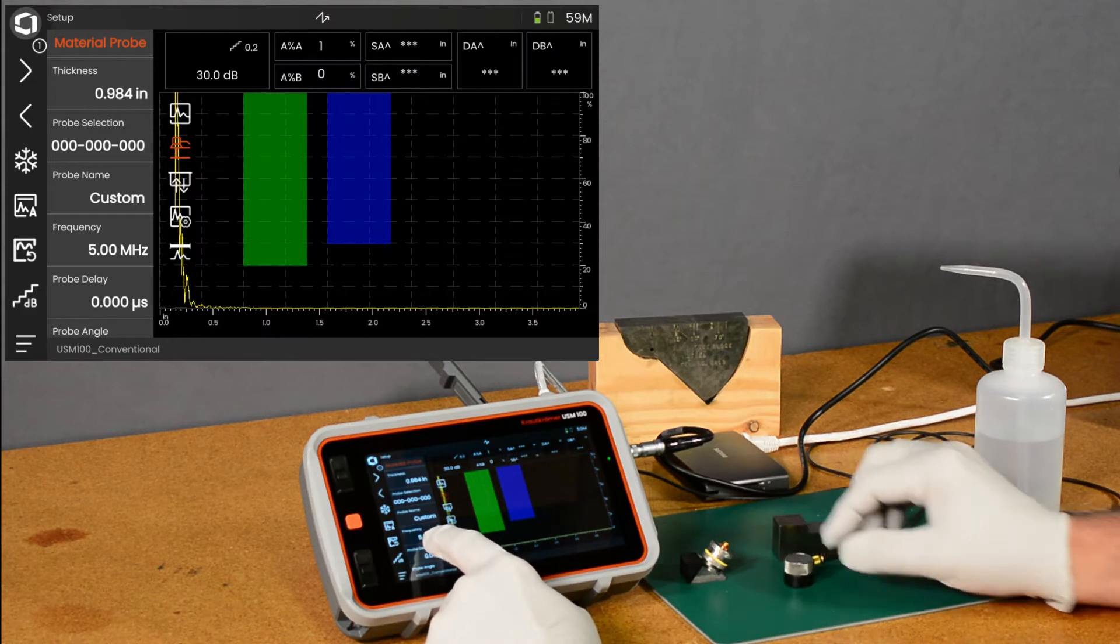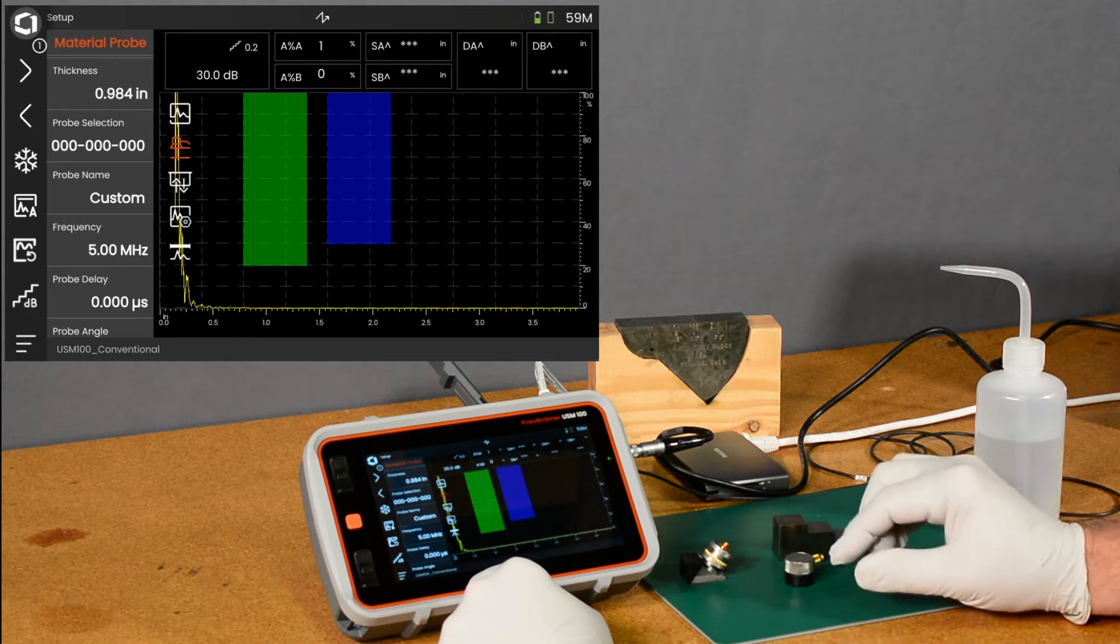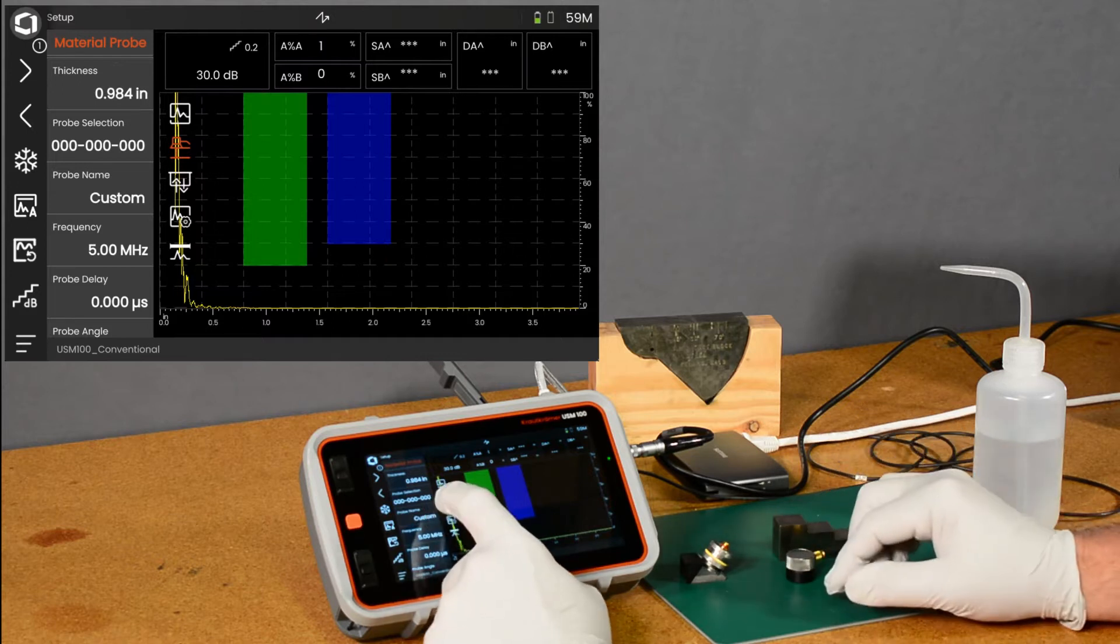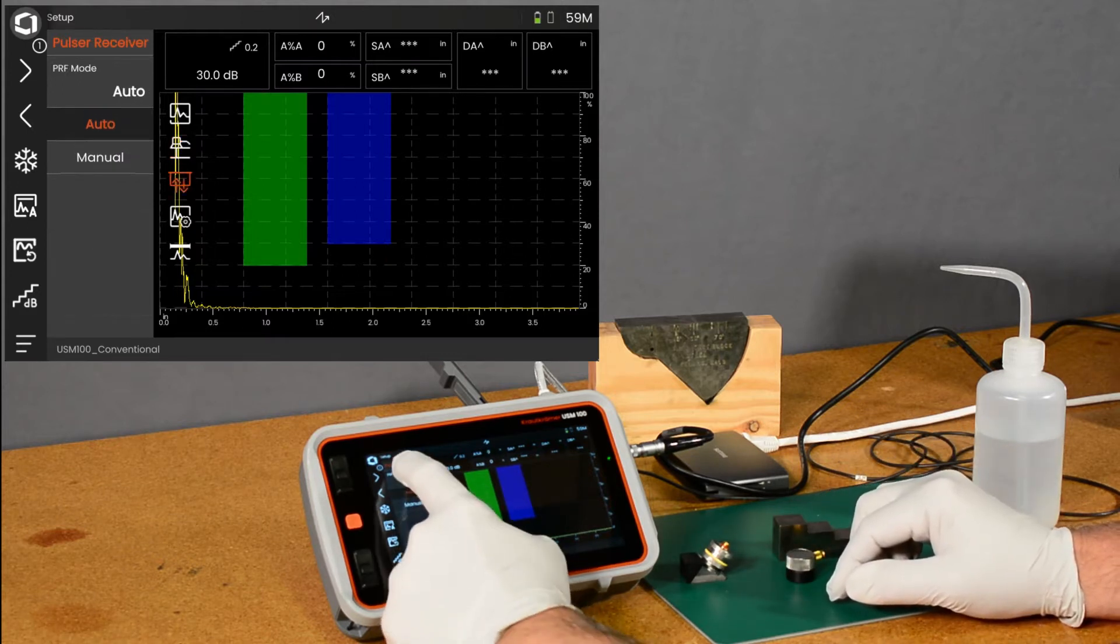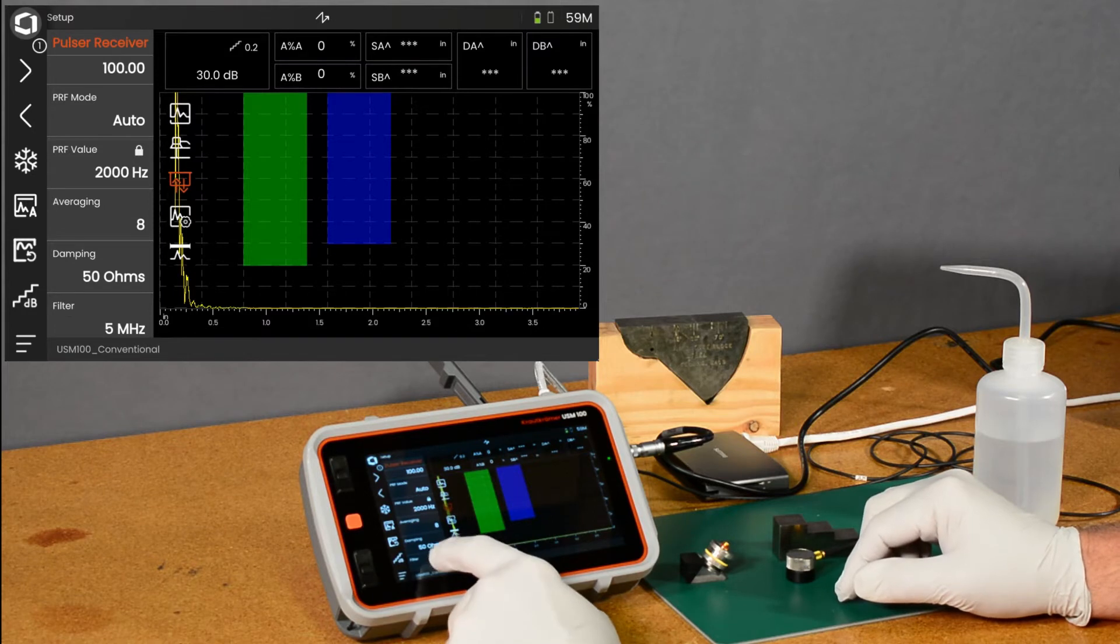This frequency control in the probe menu deals mainly with the calculation of pulse width for our square wave pulsar, so optimizing the pulsar to work with the probe. The filter selections are over here on the UT menu,